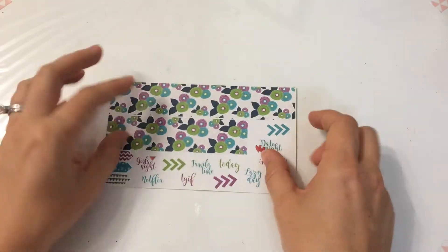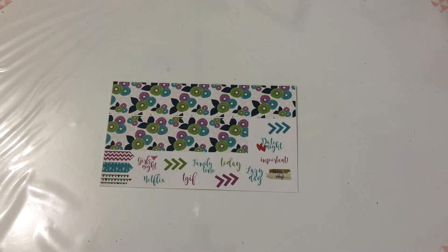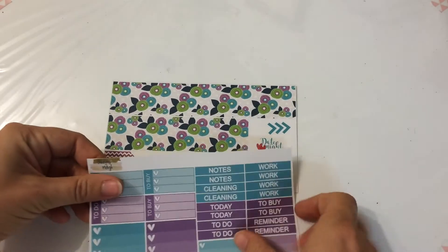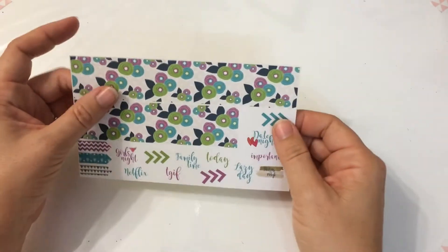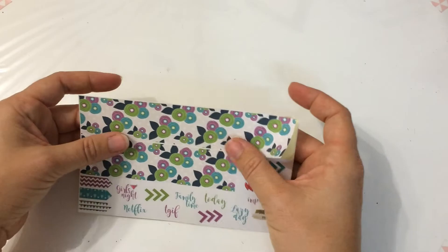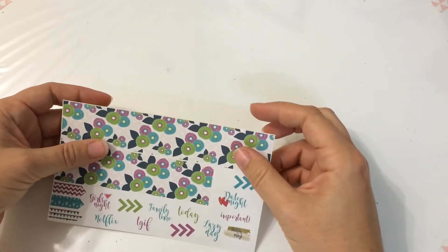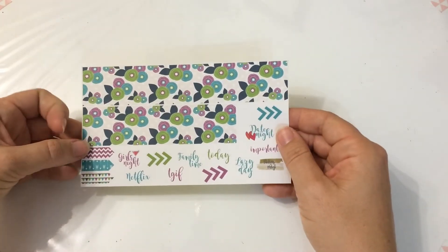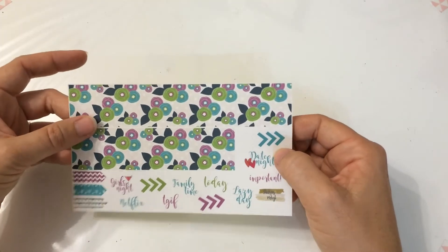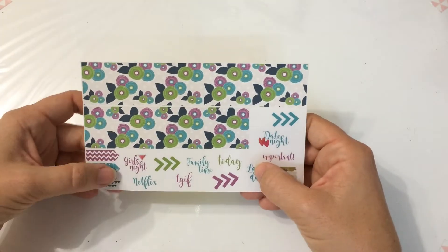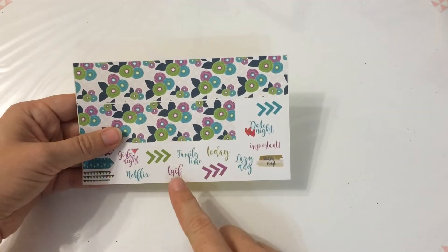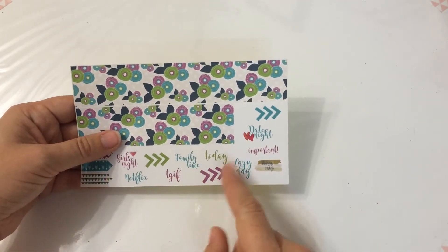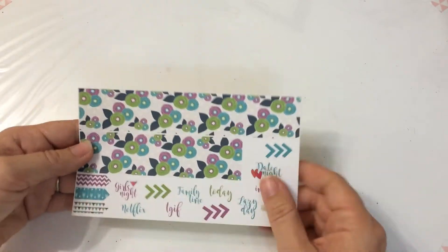This is another one that came with it which may match. I don't have an Erin Condren but these do still kind of fit at the bottom. They just cover up some of the box in the happy planner. These are something I would pick though. These are really pretty. Netflix, girls night, family time, thank god it's Friday, today, lazy day, important, date night. They're cool.